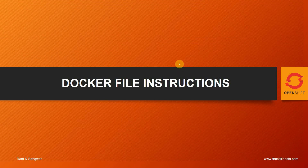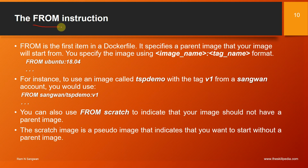The FROM instruction is the first item in the Dockerfile. It specifies a parent image that your image will start from, using the format image-name:tag. For example, FROM ubuntu:18.04. You can also use FROM sang1/tsp-demo:v1 to reference a specific account and tag. You can also use FROM scratch if you are not building your image based on any existing image. The scratch image is a pseudo image indicating you want to start without a parent image, which is what we are going to do.